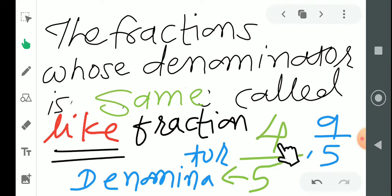Here is an example: 4/5 and 9/5. If you see, the numerators are different, but the denominators are the same - both are 5. Since the denominators are the same, we call these like fractions.